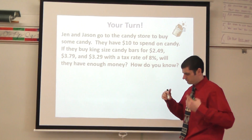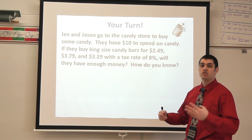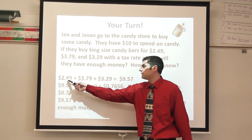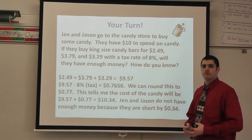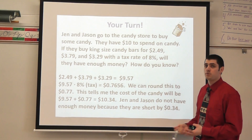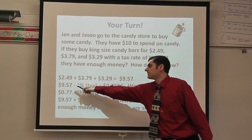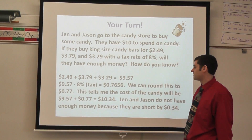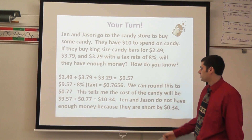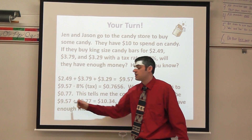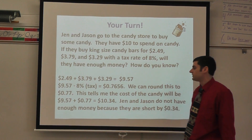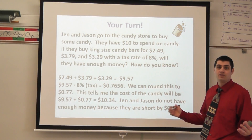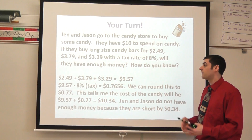Think about what you did earlier. There are numerous ways you can solve this problem — I'll show you just one possible way; yours may be different, and that's okay. First thing I would do is add up all my prices. I added up each one of the candy bars and the total was $9.57. I need to find out how much tax I'm going to pay. So I multiply $9.57 times 8% or 0.08, and that gives me 0.7656, which I round to $0.77. So the cost of the candy is $9.57 plus the tax of $0.77, which equals $10.34. Jen and Jason do not have enough money because they're going to be short by $0.34 — they didn't calculate in the tax they were going to have to pay for the candy bars.